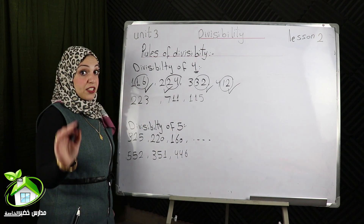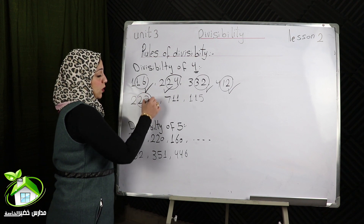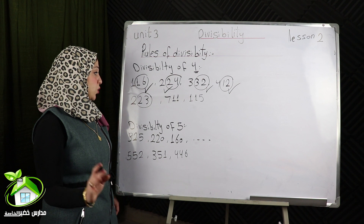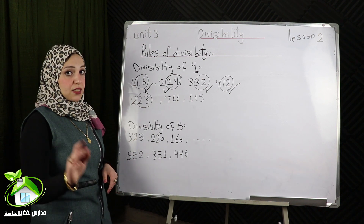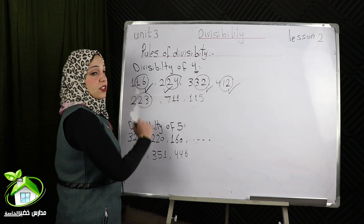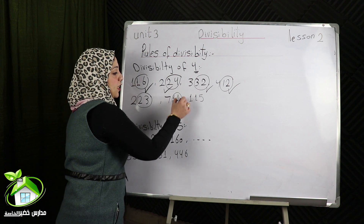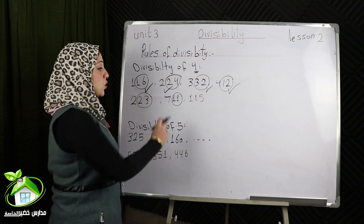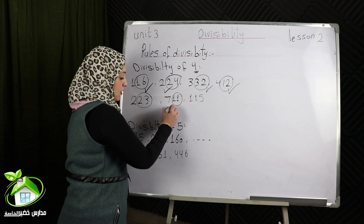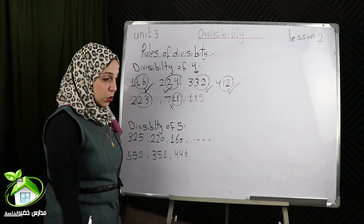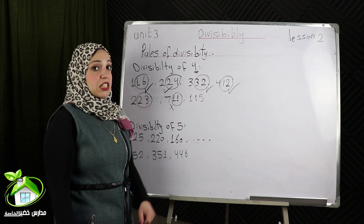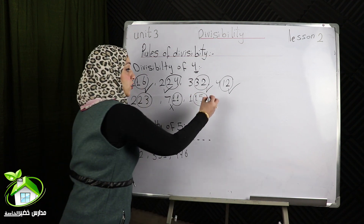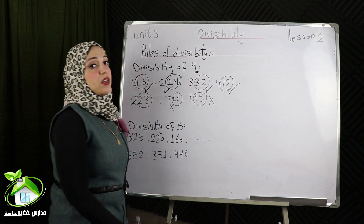223: if I determine the tens and units together I get 23. 23 isn't divisible by 4, so 223 isn't divisible by 4. 711: I determine the tens and units together — 11 isn't divisible by 4, so 711 isn't divisible by 4 also. 115: 15 isn't divisible by 4, so 115 isn't divisible by 4.